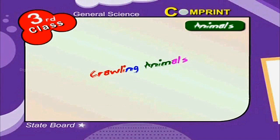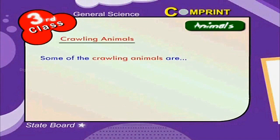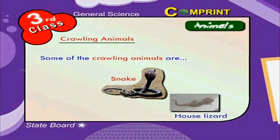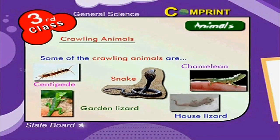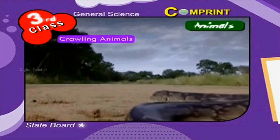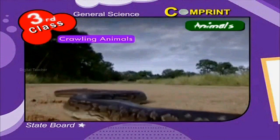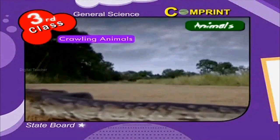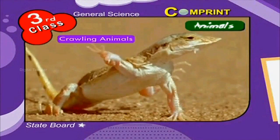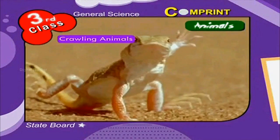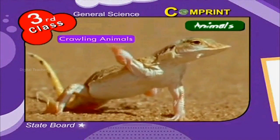Some of the crawling animals are snake, house lizard, garden lizard, centipede and chameleon. Snakes don't have legs, but the remaining animals have four legs that are very short, so they crawl on the ground.